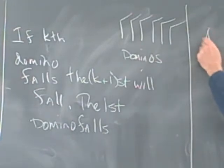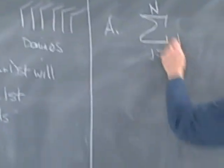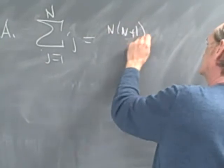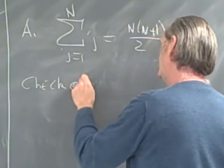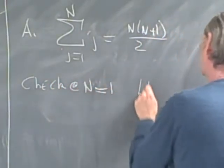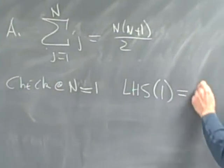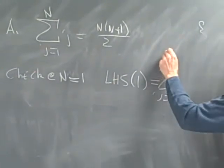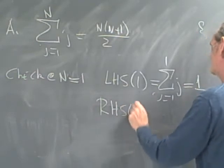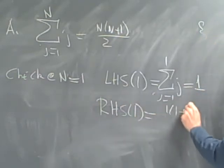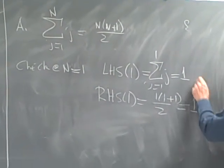Let's look at the first identity: the sum from j equals 1 to n of j equals n times (n plus 1) over 2. The first thing we do is check at n equals 1. The left-hand side at 1 is the sum from j equals 1 to 1 of j, which is just 1. The right-hand side at 1 is 1 times (1 plus 1) over 2, which is also equal to 1. So the statement is true at n equals 1.